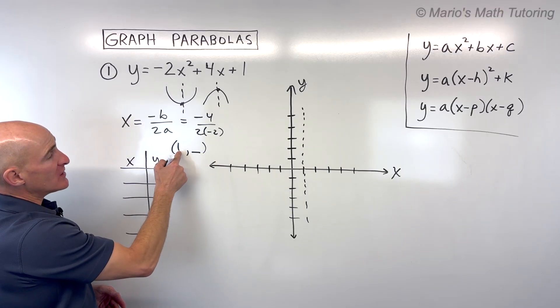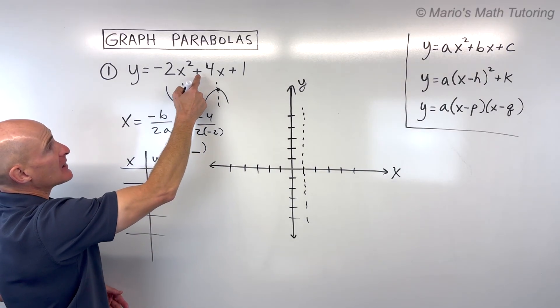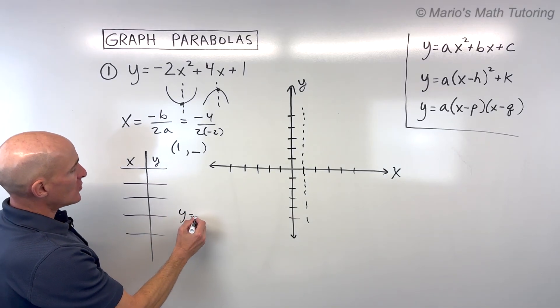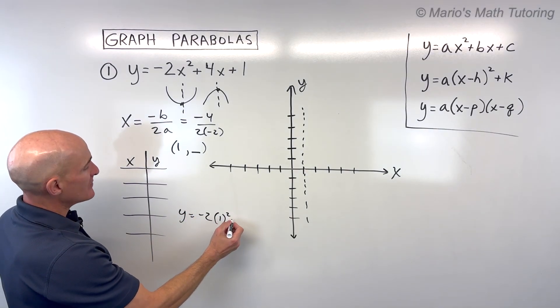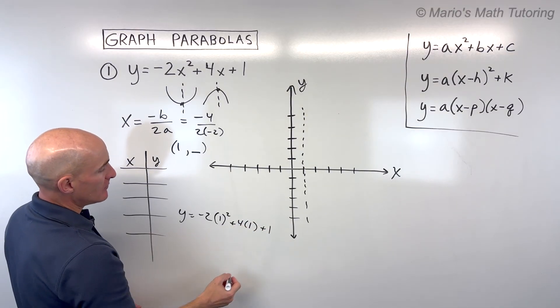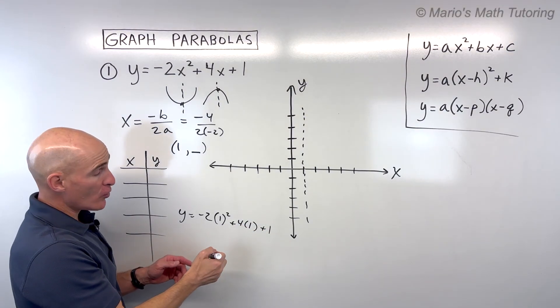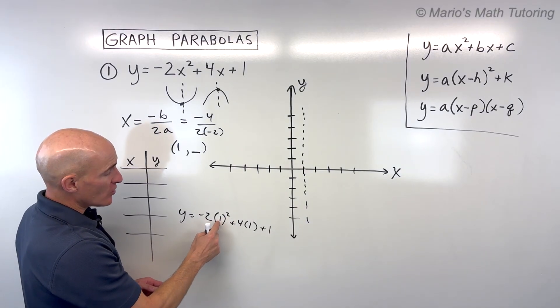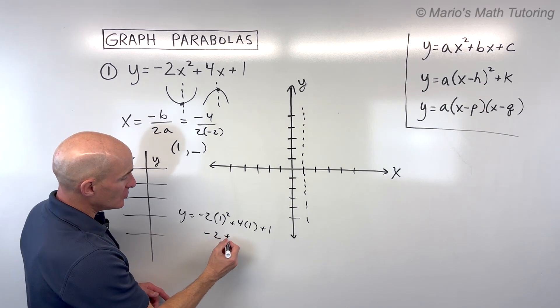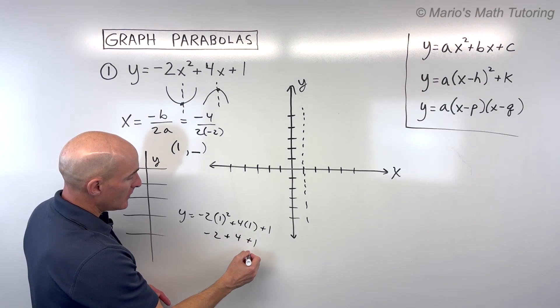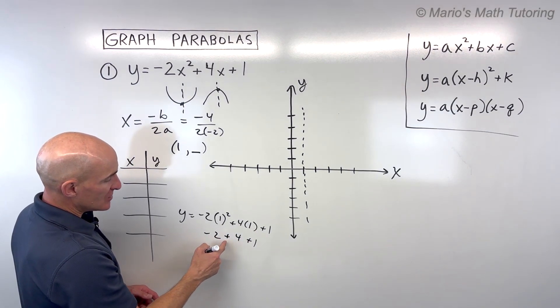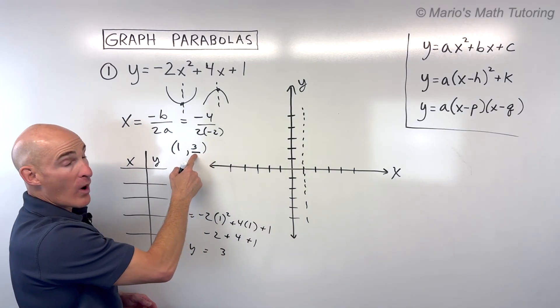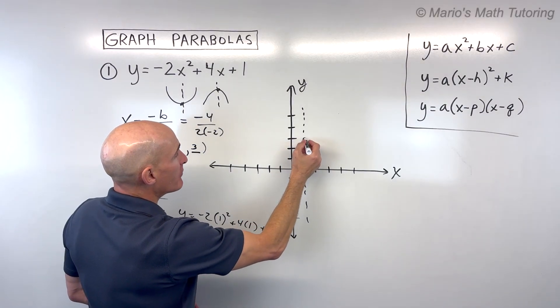Now to find the y-coordinate, we take this x value and plug it back in for x, and then we can solve for that y-coordinate of our vertex. So y equals negative 2 times 1 squared plus 4 times 1 plus 1. Make sure to do the order of operations: parentheses, then exponents, then multiplication. So 1 squared is 1 times negative 2 is negative 2. 4 times 1 is 4. If we combine these together, we get 2 plus 1, which is 3. And so that's the y-coordinate of our vertex. So right 1, up 3.